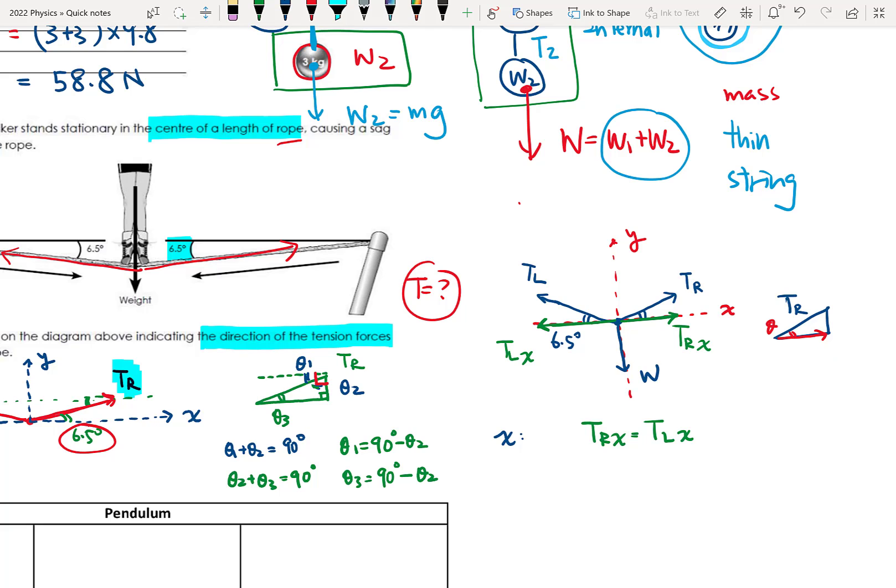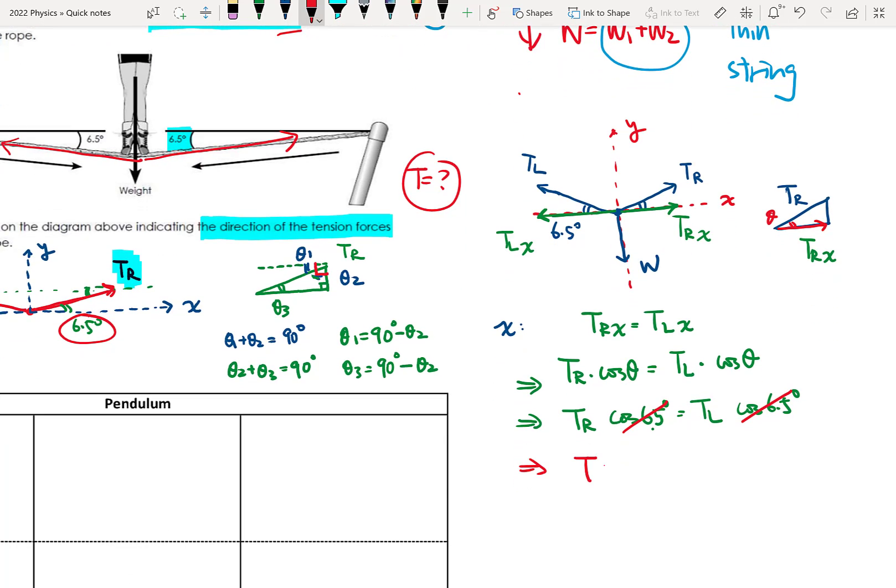And TRX is how much? So this is TRX. So the right-hand side tension, the X components of the right-hand side tension will equal to TR cosine theta. And TL left will be T left times cosine theta as well. And of course, both are 6.5 degrees. So I can write another one: TR cosine 6.5 degrees, TL cosine 6.5 degrees. And then you know they can cancel. So we can see TR and TL are the same. So the right-hand side and left-hand side, they have the same tension. So I can use T equals to TR and TL. So this is the first part that we get.